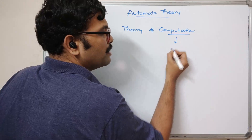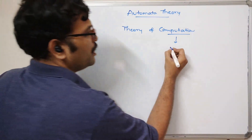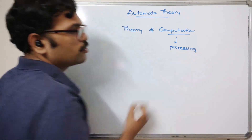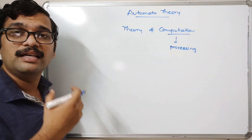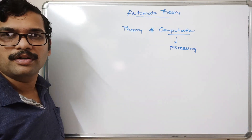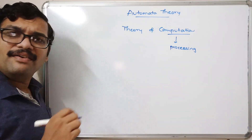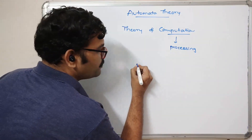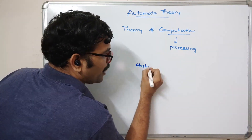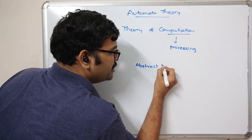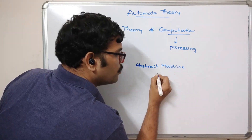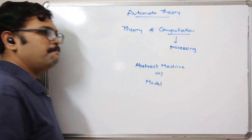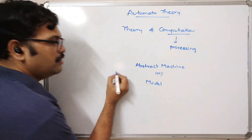Computation means nothing but processing — processing is called computation. So what kind of processing? Processing the input towards the output. In every device there will be low-level calculations, and we call that an abstract machine, or simply a model.